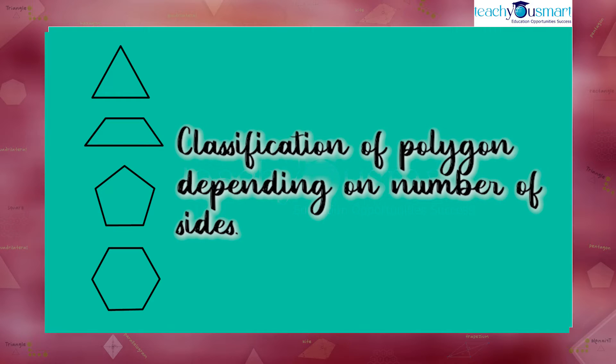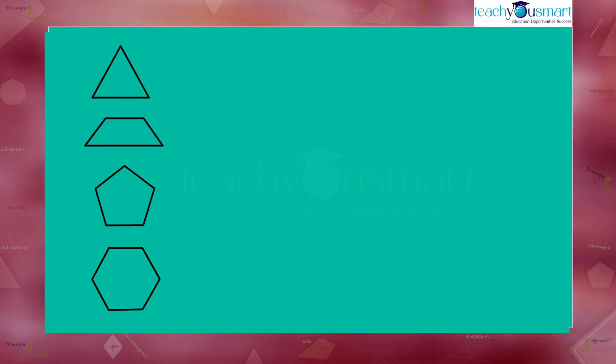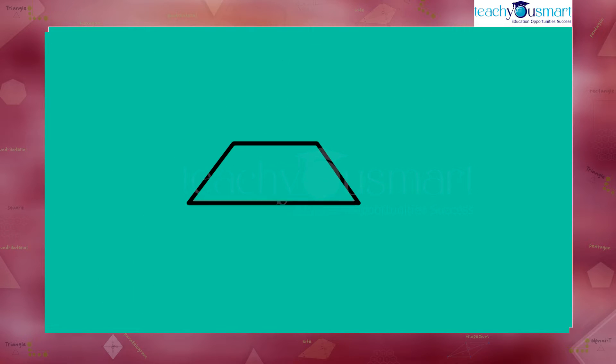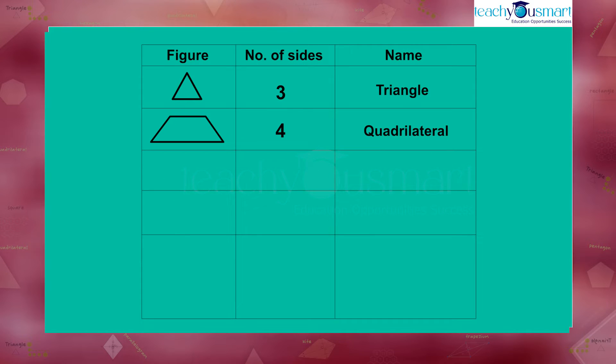We can classify the polygons according to the number of sides. A three-sided polygon is called a triangle, a four-sided polygon is called a quadrilateral, a five-sided polygon is called a pentagon, a six-sided polygon is called a hexagon, and an n-sided polygon is called an n-gon.